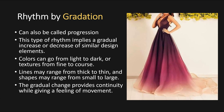Next we have rhythm by gradation — this can also be called progression, but I always call it gradation. This type of rhythm implies a gradual increase or decrease of similar design elements. Colors can go from light to dark, or textures can go from fine to coarse. Lines may range from thick to thin, and shapes may range from small to large. The gradual change provides continuity while giving a feeling of movement. The woman in the dress on the left is using gradation because the color goes from a dark purple and slowly fades into a tan at the bottom.